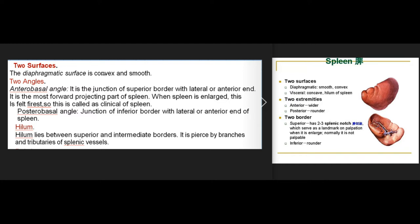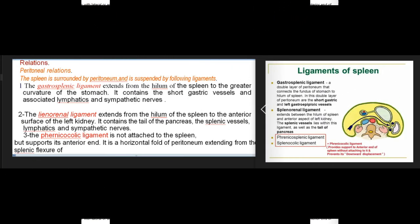The anterobasal angle is the junction of the superior border with the lateral or anterior end; it is the most forward-projecting part of the spleen. When the spleen is enlarged, this is felt first — hence it is called the clinical pole of the spleen. The posterobasal angle is the junction of the inferior border with the lateral or anterior end. The hilum lies between the superior and intermediate borders.